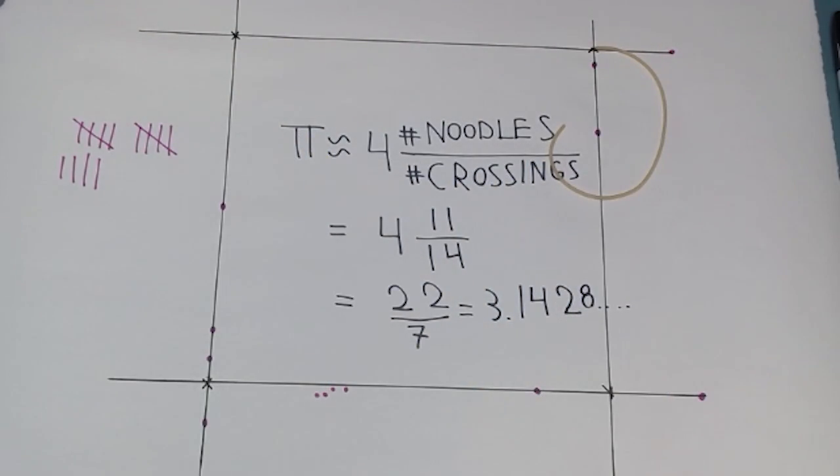Now that we've cooked the spaghetti, when we throw it onto the grid, it's no longer just a straight line. It can be a curve of any shape. The problem of understanding what happens for arbitrarily shaped noodles is called the Buffon noodle problem.